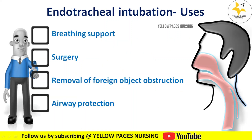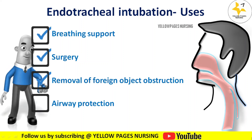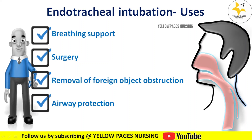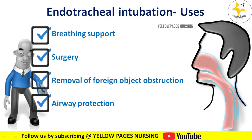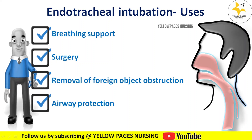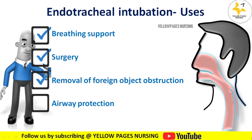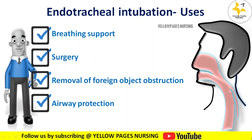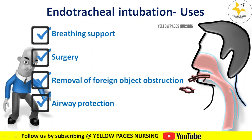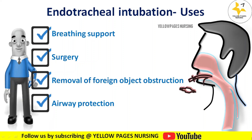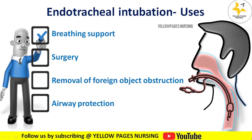Endotracheal tubes are used for intubation for the following reasons. First is breathing support — an endotracheal tube can support breathing in patients with respiratory disease conditions such as pneumonia, respiratory failure, and acute respiratory distress syndrome. Next is surgery — during surgery when patients are under general anesthesia, the lungs are paralyzed, and intubation allows the tubes to be connected to a mechanical ventilator to assist with breathing.